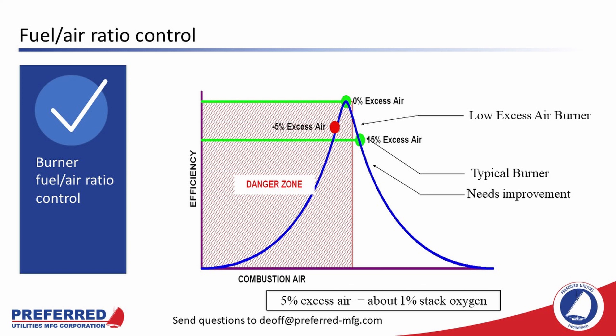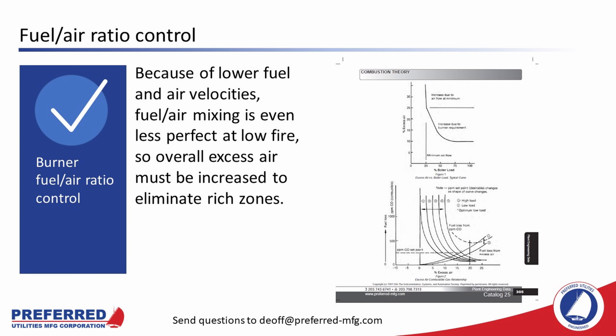Most burner manufacturers guarantee 15% excess air or 3% stack oxygen. Preferred burners will burn down to about 10% excess air or 2% stack oxygen. Note these excess air levels are at high fire only. Because of lower fuel and air velocities, fuel-air mixing is even less perfect at low fire, so overall excess air must be increased to eliminate rich zones. The takeaway from Preferred's catalog 25 diagrams is that excess air increases at lower firing rates — how much really depends on the burner.